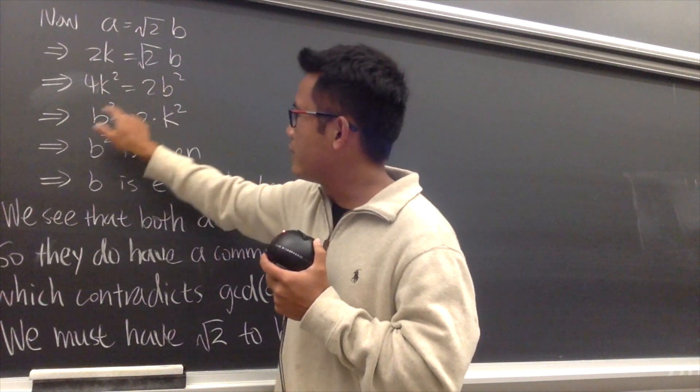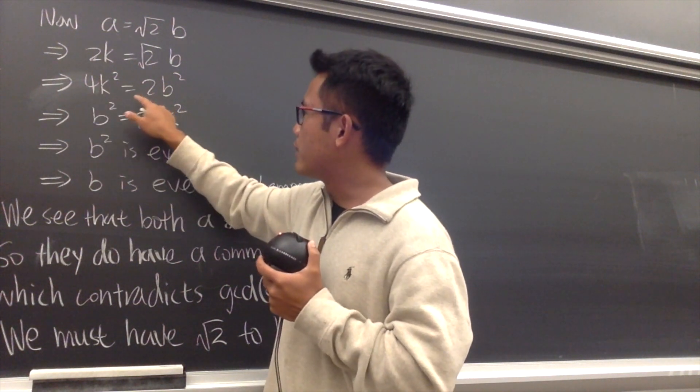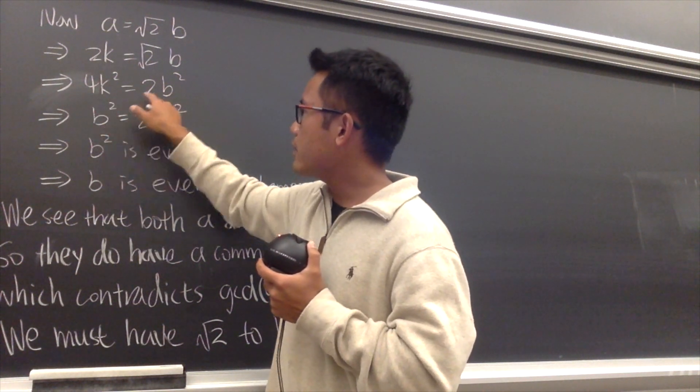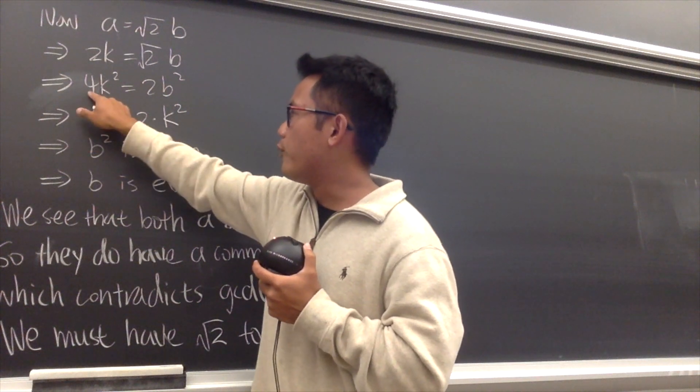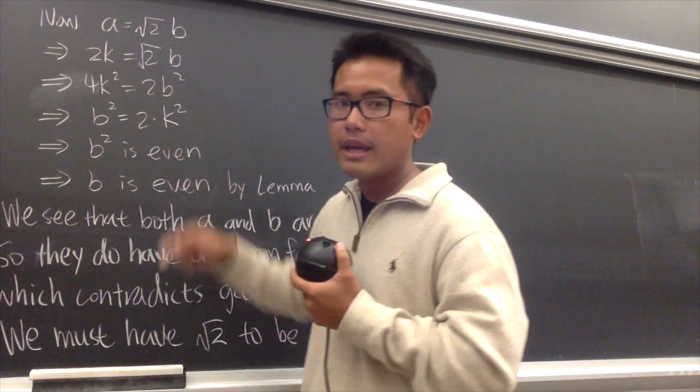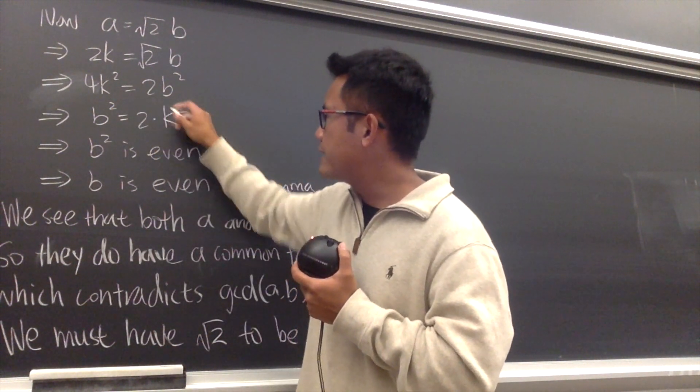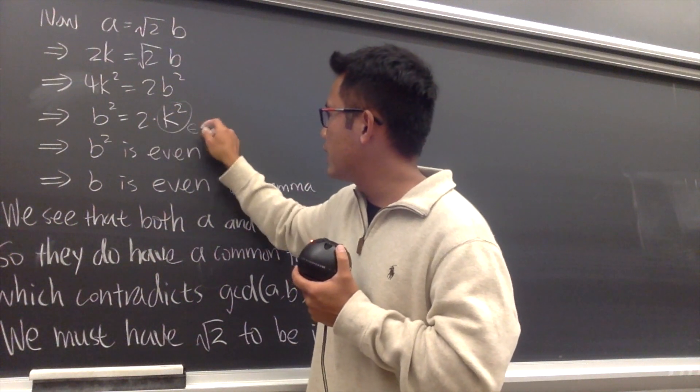And now, I'm going to put down this right here first, and I will divide by 2 on both sides. So that's why you see b squared right here, the 2 is gone already, the 4 becomes a 2 because I divided both sides by 2. And I put down k squared right here. And now we have b squared equals 2 times k squared, and once again, this is just an integer.